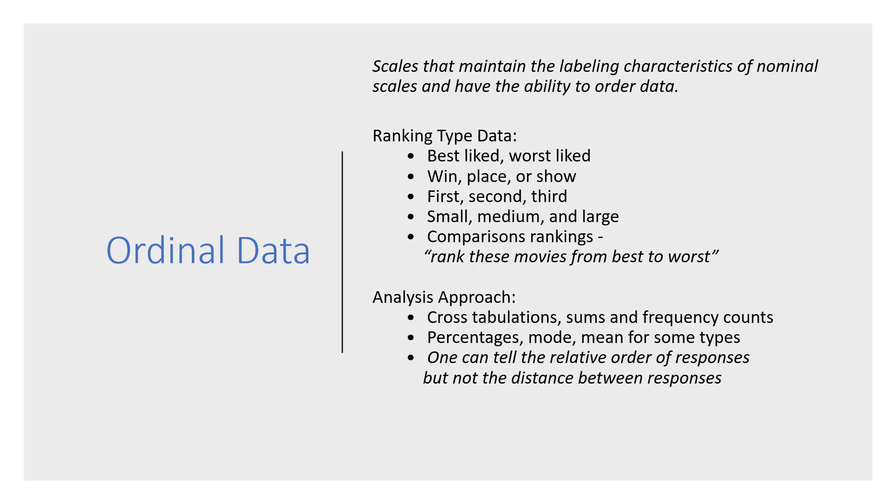Next type of scale is called ordinal data. Ordinal data is very interesting, very easy to see the relative order from the best to the least. Best liked, worst liked, first, second, third. It's classifying, but at the same time gives a sense of magnitude, meaning the quality of being prestigious winners. Ordinal data, we can do percentages, cross-tabulations, mode, and mean for some types.